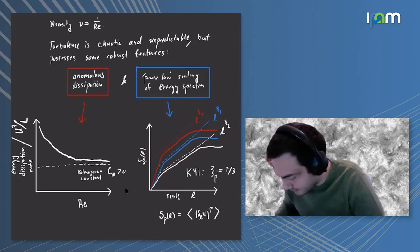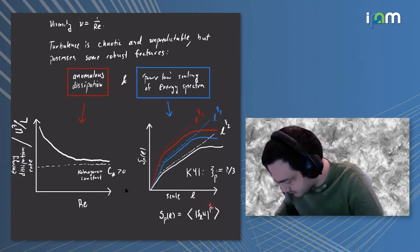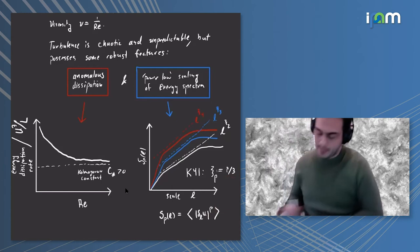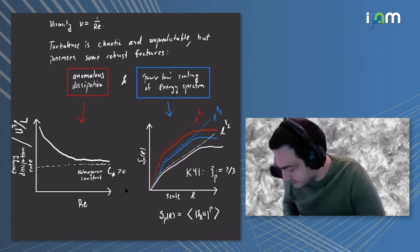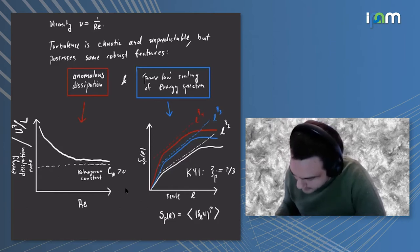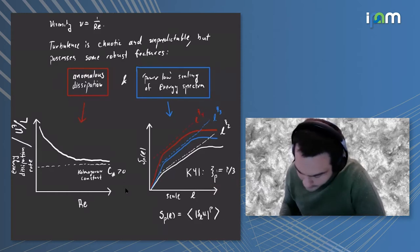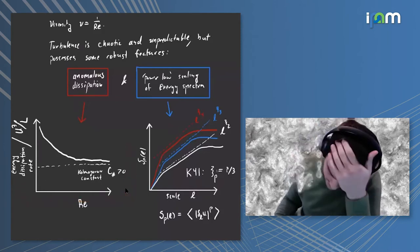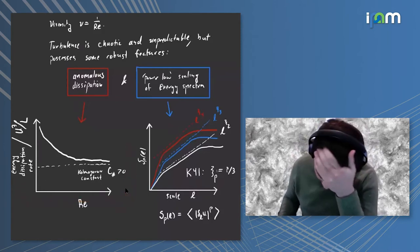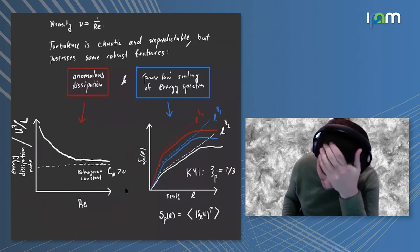Turbulent fluids display certain ranges of scales where these objects scale with some fractional power. Kolmogorov 1941 theory predicts that the power scaling for the pth order structure function is p over three. Onsager in 1945 realized that when p equals three, this exponent is the threshold for whether the fluid can sustain this type of behavior.